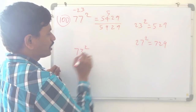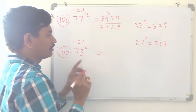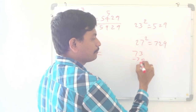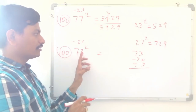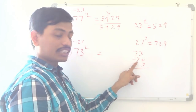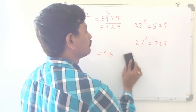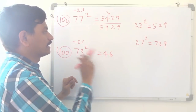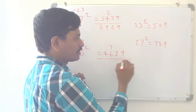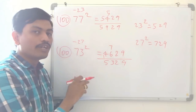Now 73 squared, which is nearer to 100, how much lesser? Minus 27. To subtract 27 from 73, I do minus 30 plus 3: 73 minus 30 is 43, plus 3 is 46. And 27 squared is 729 — we can apply the nearer-to-20 method for this. Carry the 7: 46 plus 7 is 53. So 5329 is the square of 73.